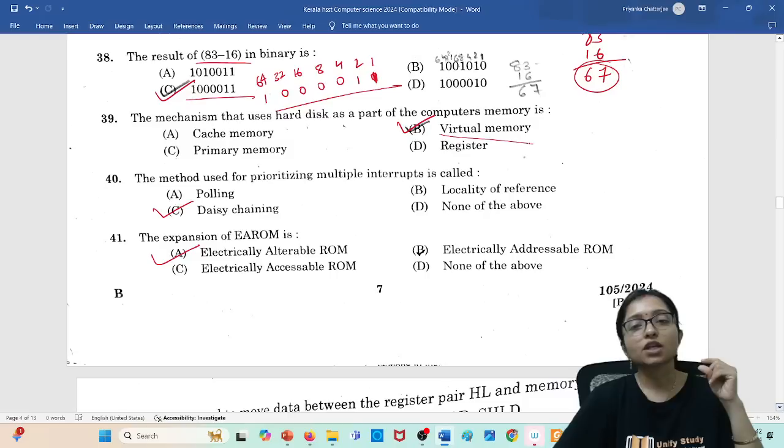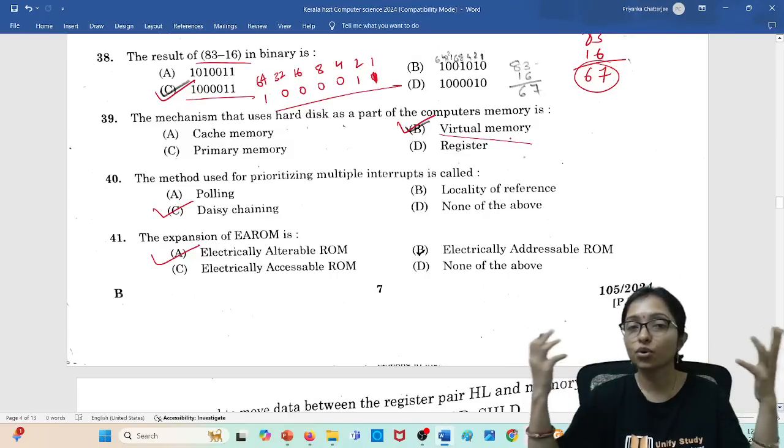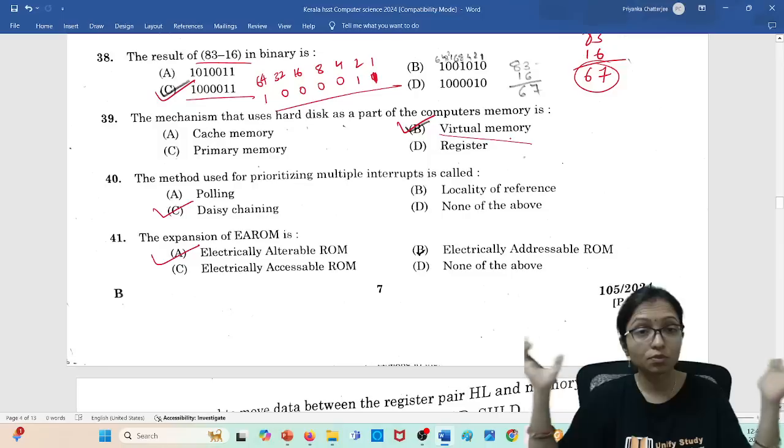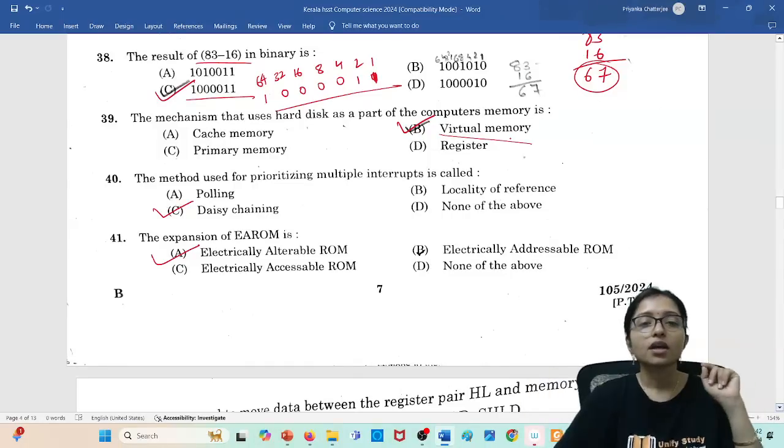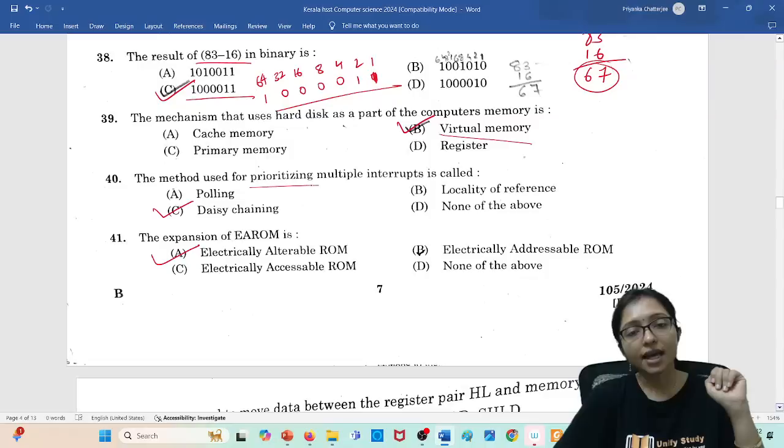The mechanism used in the hard disk as part of computer memory, that technique is called virtual memory. Because in virtual memory only we are trying to show memory space more by using hard disk. So virtual memory will be the answer.